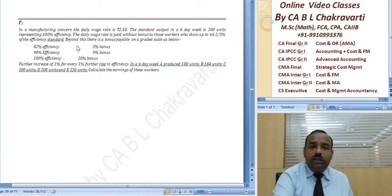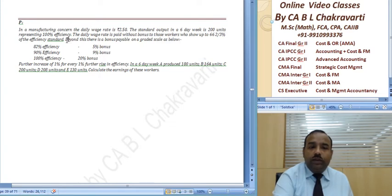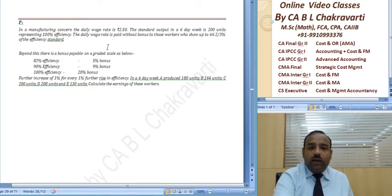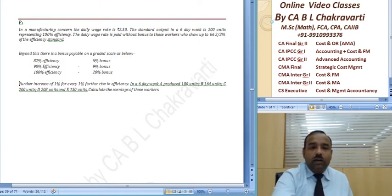Beyond this, there is a bonus pay bill on a graded scale. At 82% efficiency we have 5% bonus, 90% we have 9% bonus, 100% efficiency 20% bonus. Further increase of 1% for every 1% further rise in efficiency.